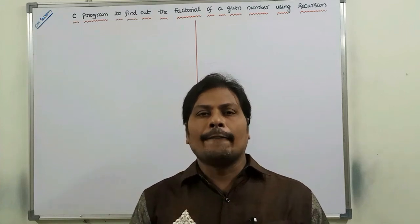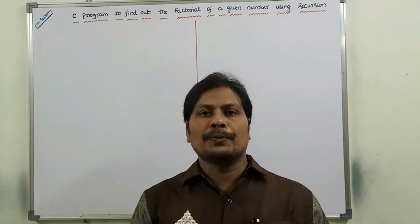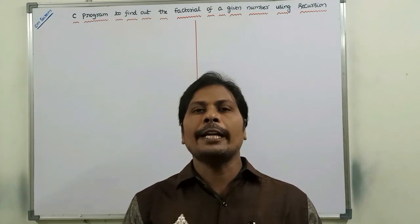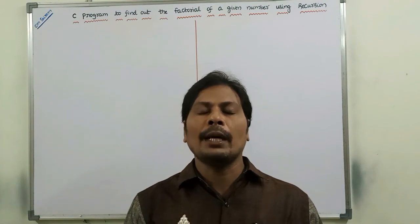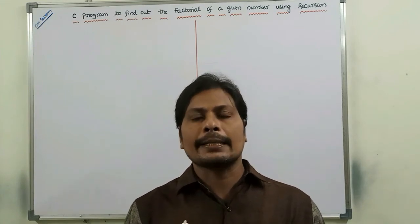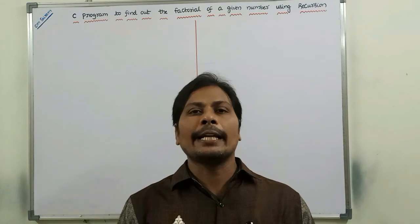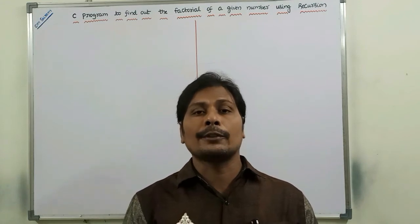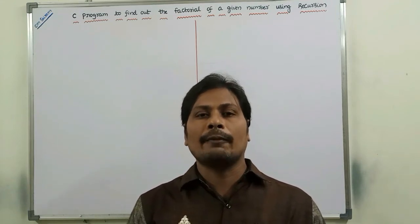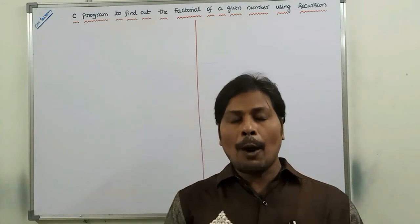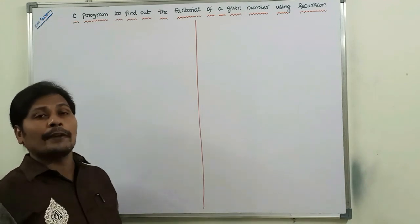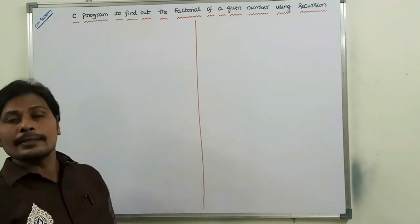Hi friends, welcome to our YouTube channel. Today we have to discuss about a C program to find out the factorial of a given number using recursion. In the previous video, we have already discussed about a C program to find out the GCD of two numbers using recursion. If anybody wants, please refer that video in my YouTube channel. Now, we have to discuss about how to find out the factorial of a given number using recursion in C programming.